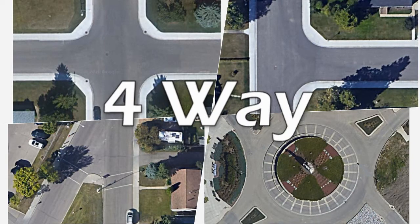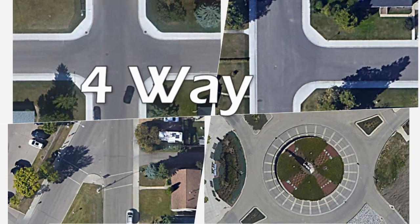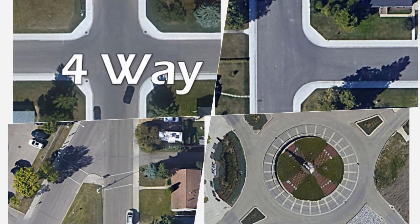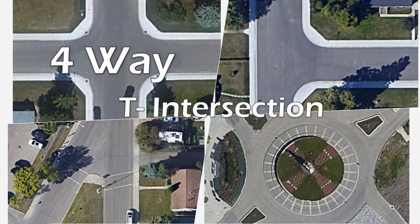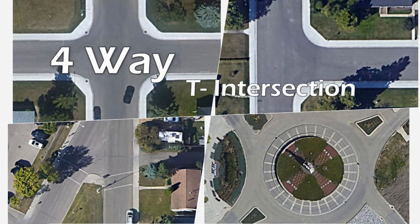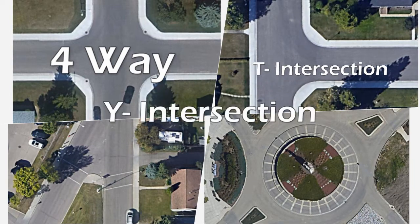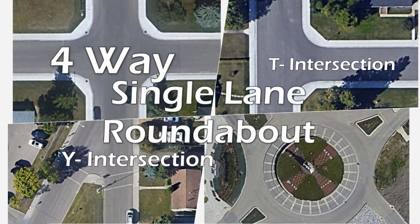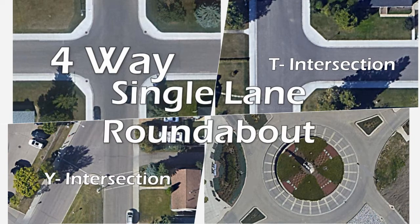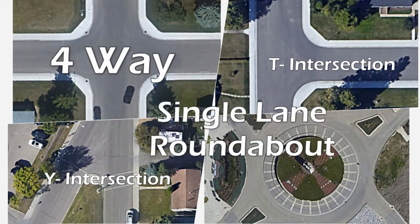Intersections can come in different shapes, such as the common 4-way intersection. Next we have the T-intersection, also referred to as a 3-way intersection. The Y-intersection. And although rare, but becoming more popular in newer areas, the single lane roundabout.